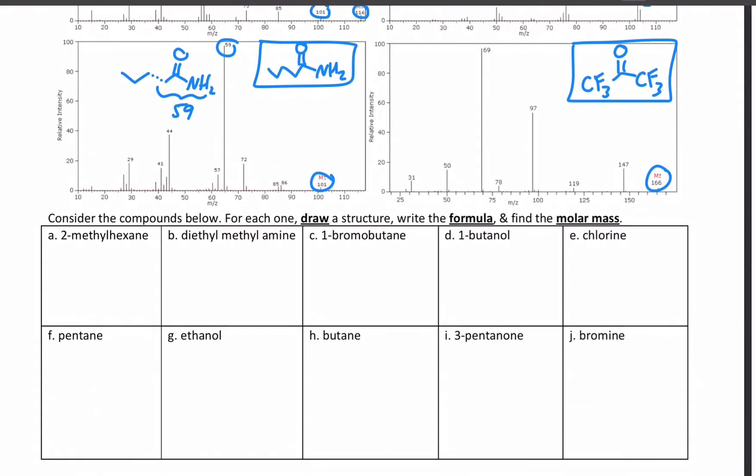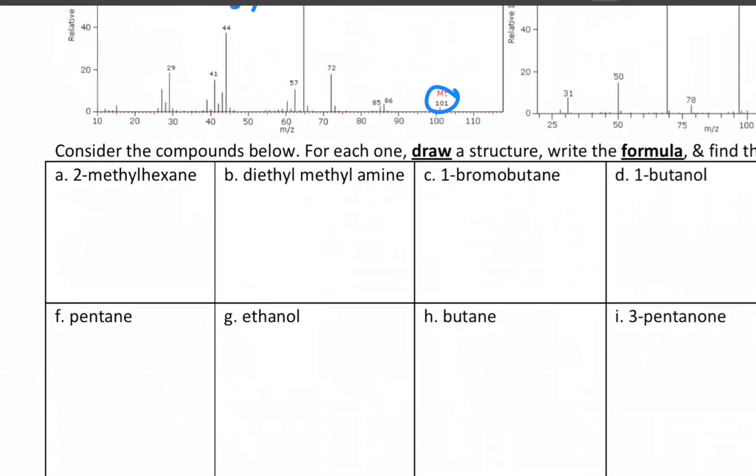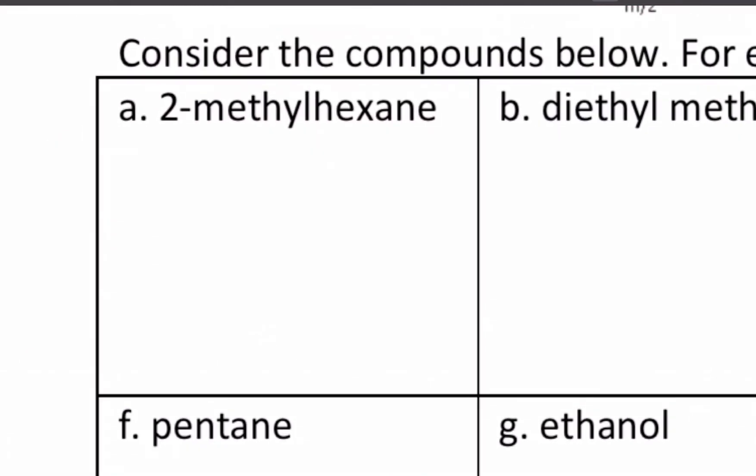So that works all fine and well if we have no structures and we're just trying to do a matching game, which is what you're going to keep doing. On the back are some homework problems that match molecules with their mass spectra, but we've been given them now just as names. So we need the structure of each one, the molecular formula, and then the molar mass.